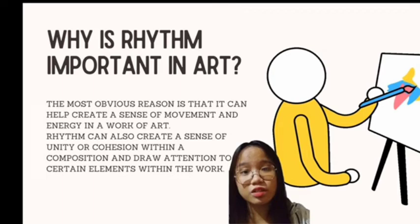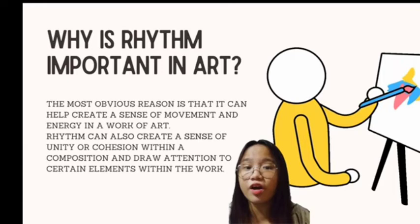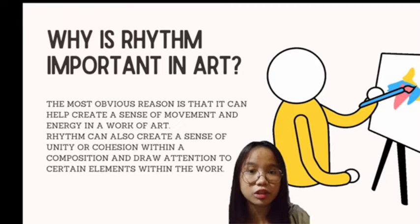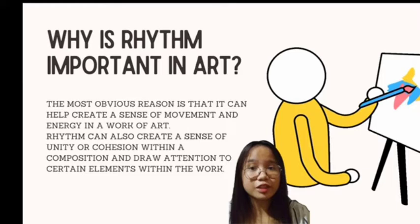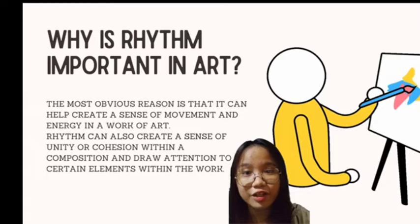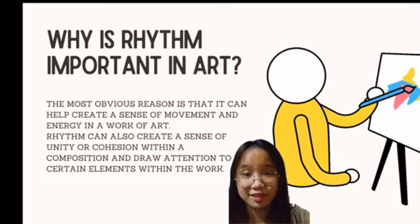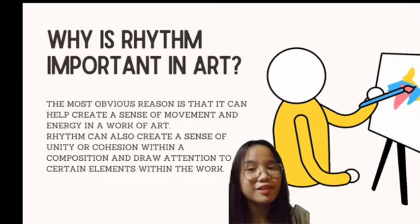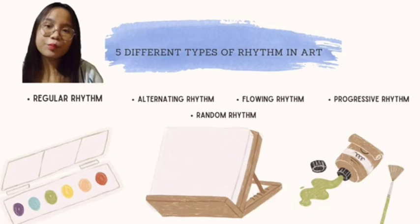Why is rhythm important in art? The most obvious reason is that it can help create a sense of movement and energy in a work of art. Rhythm can create a sense of unity, art cohesion within a composition, and draws attention to certain elements within the work. Art is all about feelings, and rhythm is the only principle of art that has the potential to create an emotion by itself. Unlike music or motion pictures, art is static — creating a picture using a combination of elements to make a viewer appreciate the image and make them go through the entire piece from one place to another is especially important.